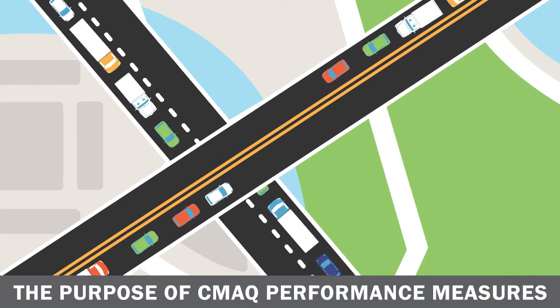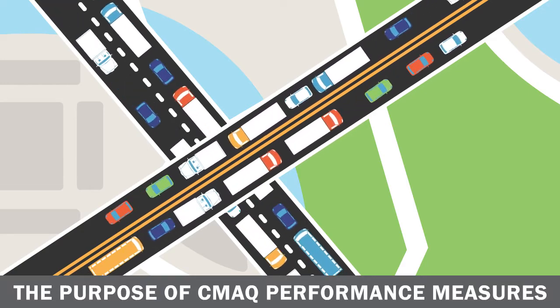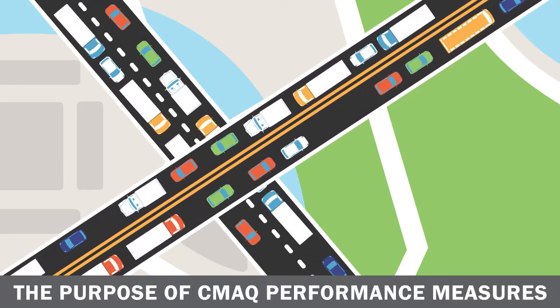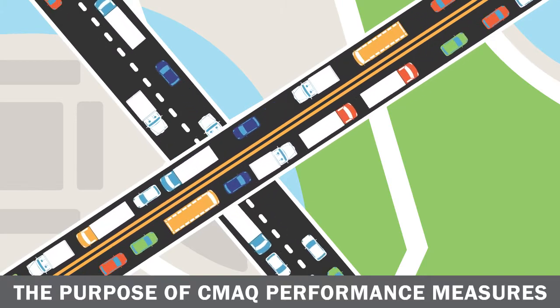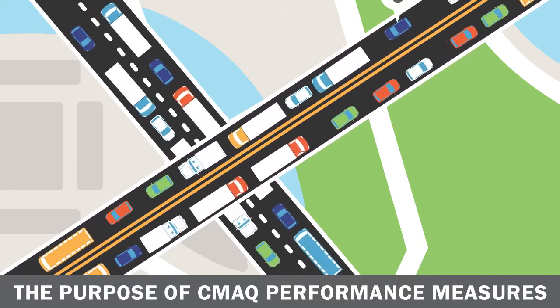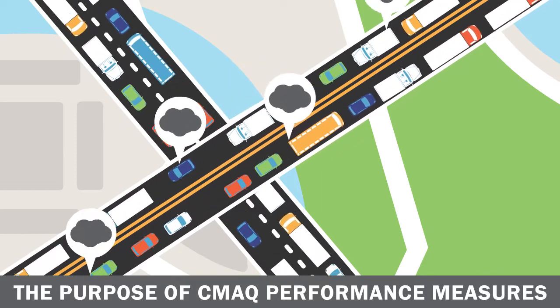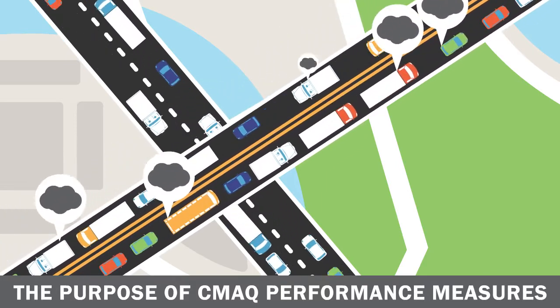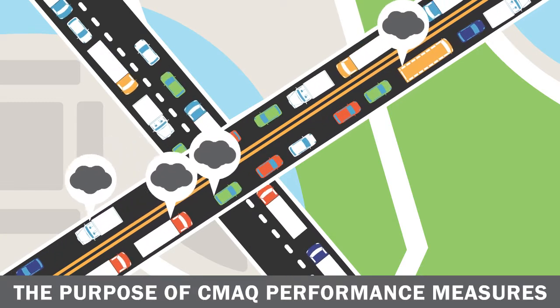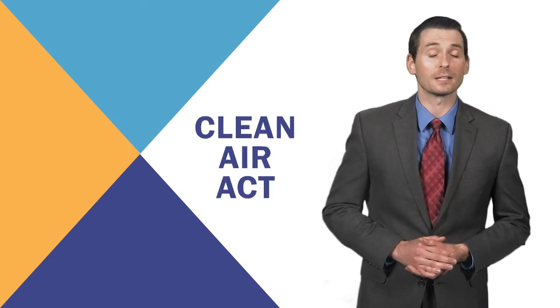Let's start by looking at the purpose of the CMAQ performance measures. The purpose of the PHED and non-SOV measures is to assess traffic congestion. The purpose of the total emissions reduction measure is to assess on-road mobile source emissions reductions associated with projects funded by the CMAQ program. The overall purpose is to assess how the CMAQ program is being carried out. The measures enable us to see how effectively the program works as a flexible funding source for state and local governments for transportation projects and programs to help meet the requirements of the Clean Air Act.